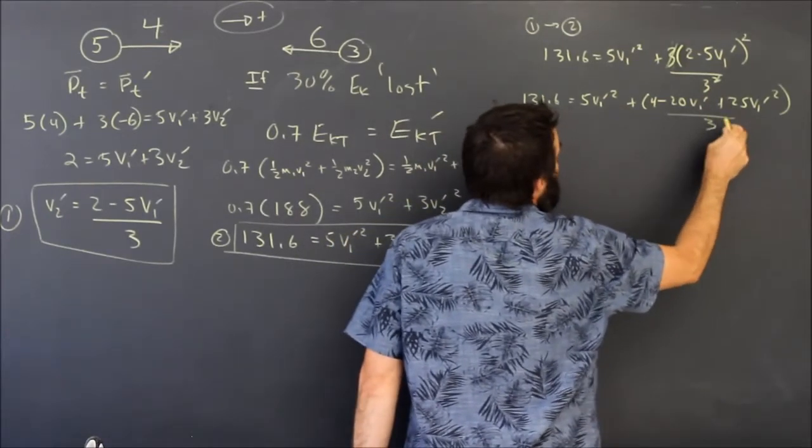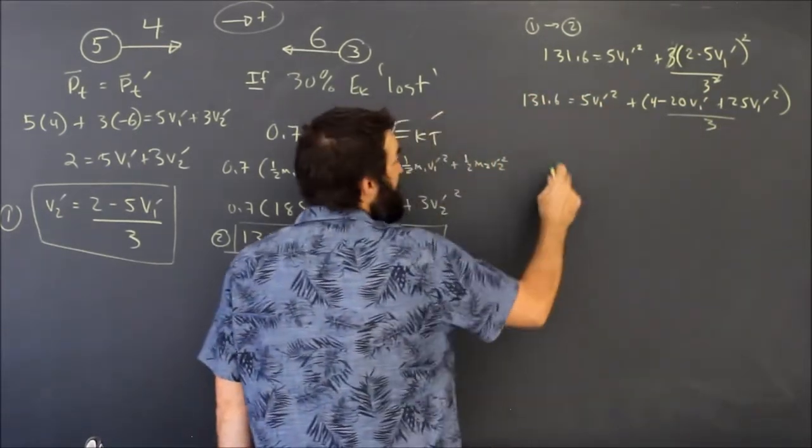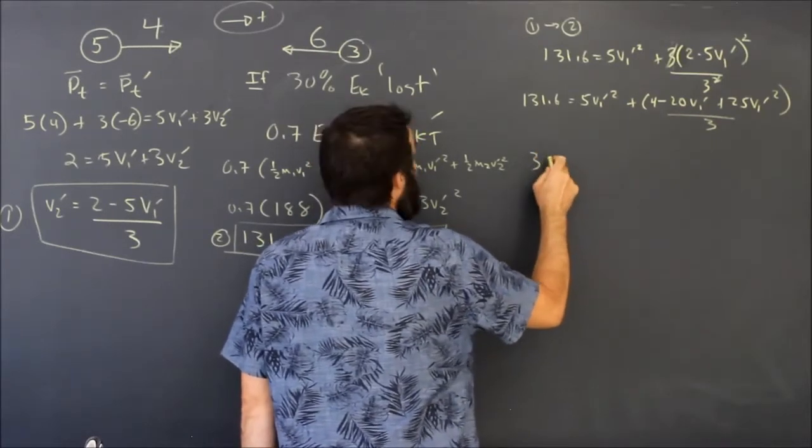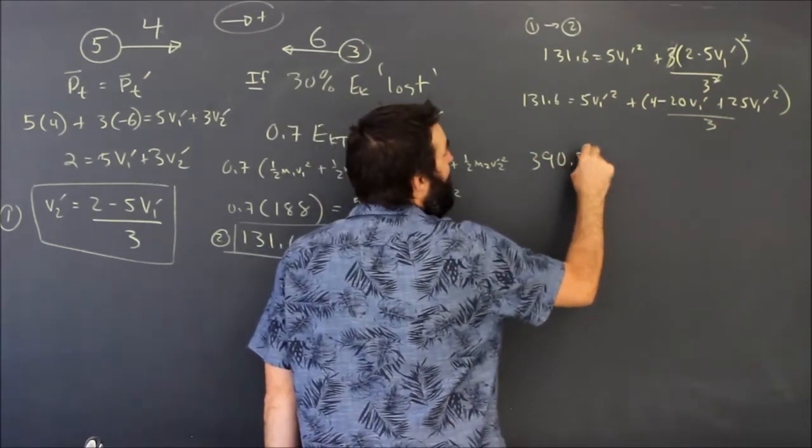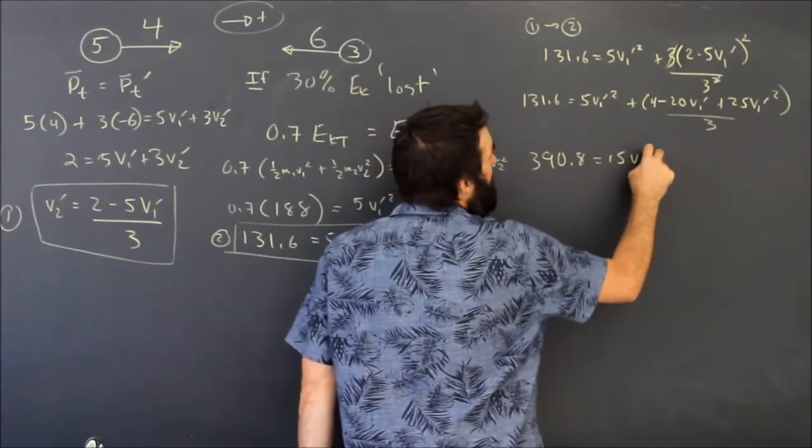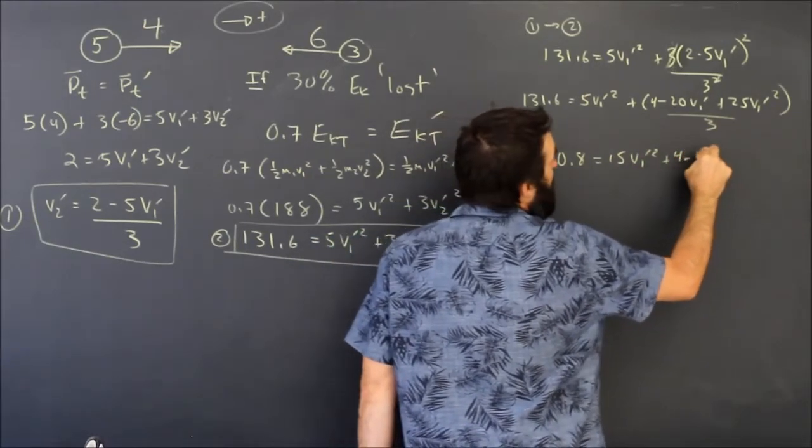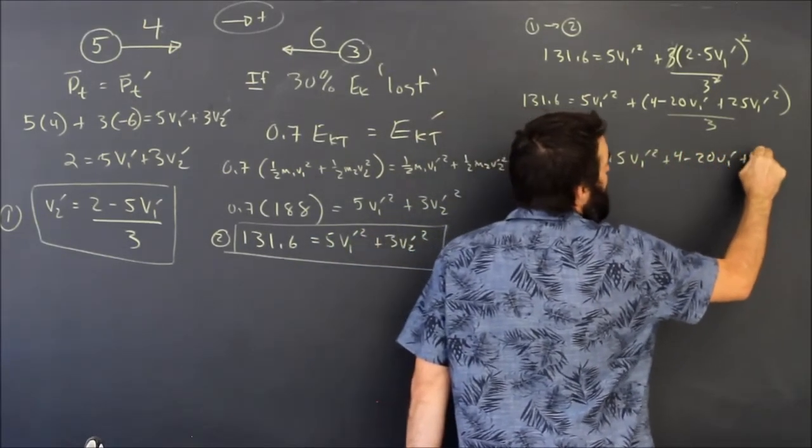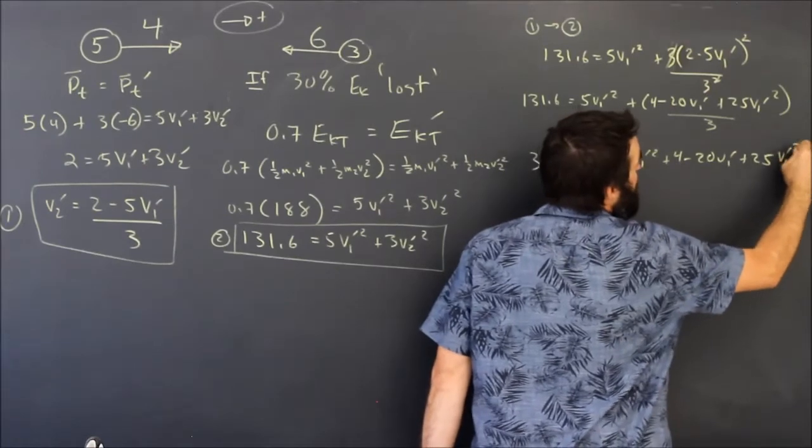But if I multiply by 3, then I can get rid of that. 131.6 times 3 is 390.8 as I recall, equals 15 v1 prime squared plus 4 minus 20 v1 prime plus 25 v1 prime squared.